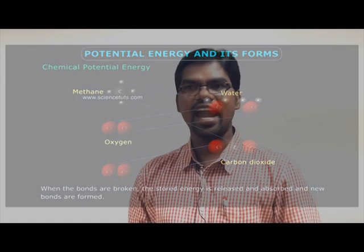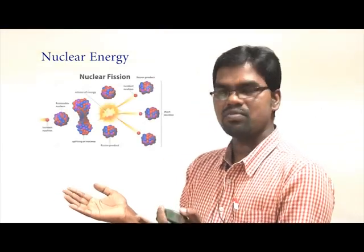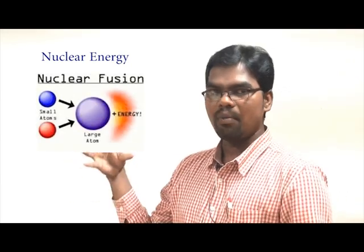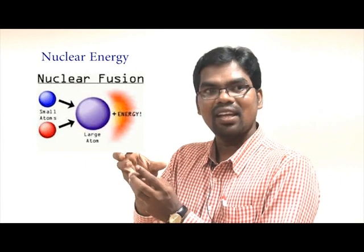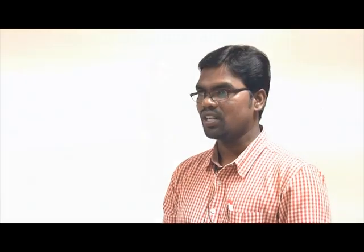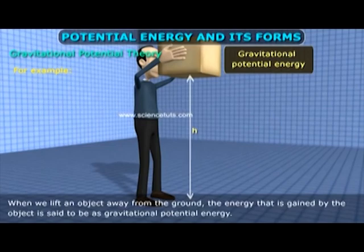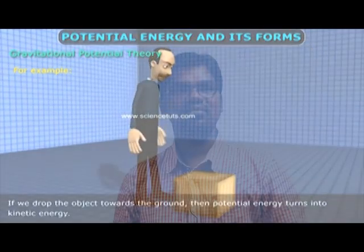That is chemical energy. And nuclear energy — you know nuclear reactions. Whenever one atom is split into many atoms and forms a new atom, that is nuclear fission. And whenever many atoms are combined with each other and form a new atom, some energy is also released. Those energies are called nuclear energies. Gravitational potential energy is what we discussed in the earlier example — whenever we apply energy against the gravitational force, some energy is stored. That is gravitational potential energy.